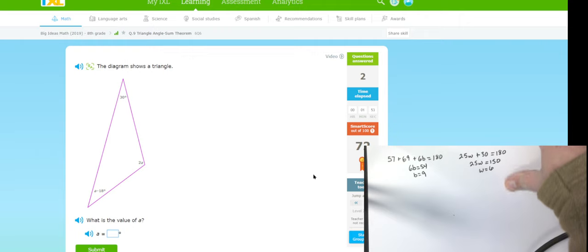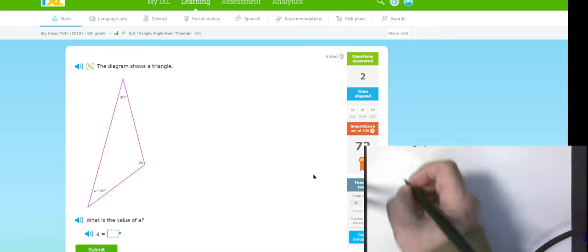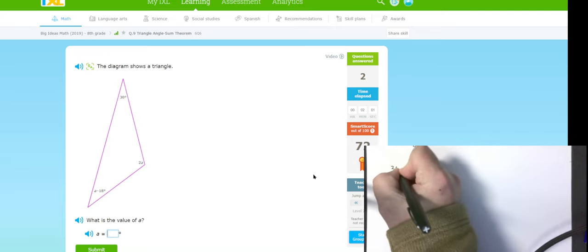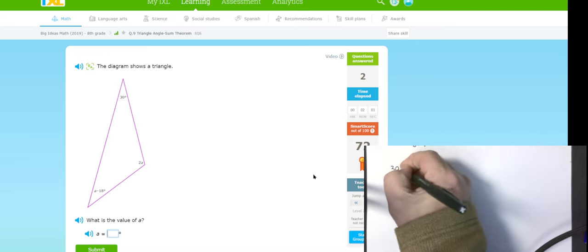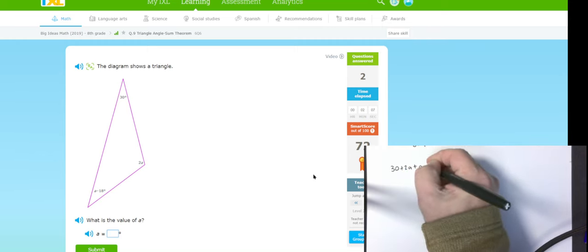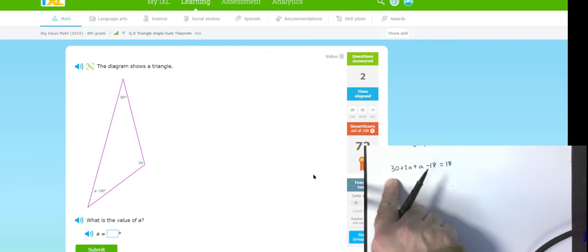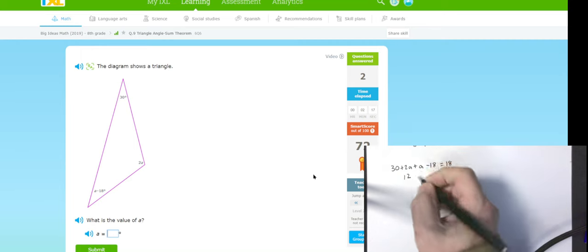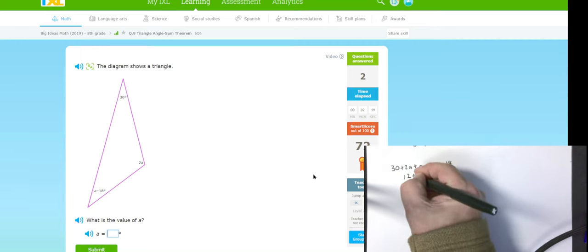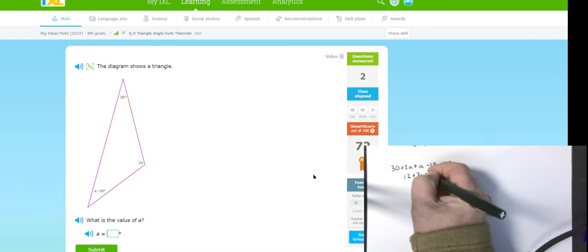Well, this one looks a little bit more complicated, but it's still same type of work. I have 30 plus 2A plus A minus 18 is 180. 30 minus 18 is 12. 2A plus 1A is 3A.